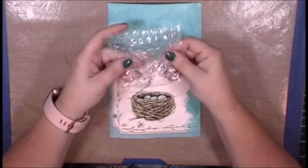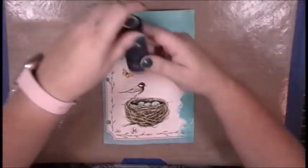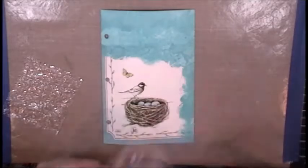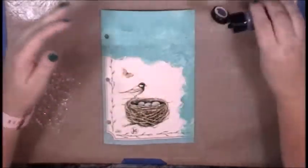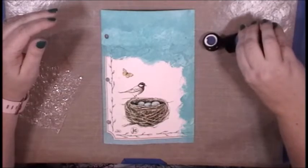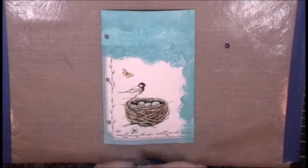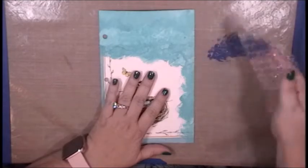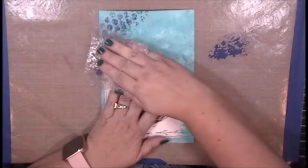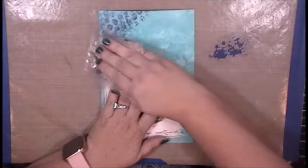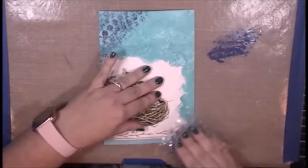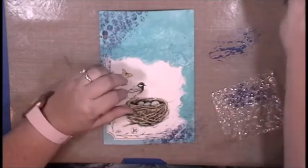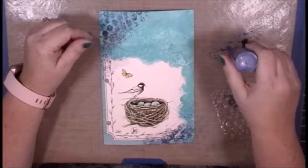I'm going to use this bubble wrap and make some marks with Chipped Sapphire distress paint. I'm going to do this again to push the color to the background and pull that focal image to the foreground. I am adding the paint to my craft surface here and picking it up with the bubble wrap and adding some bubbles or circles to the top left hand side and the bottom right hand side. This is in an attempt to blend that napkin into the paint so it looks like one piece of paper with the image coming up off of the background into the foreground.